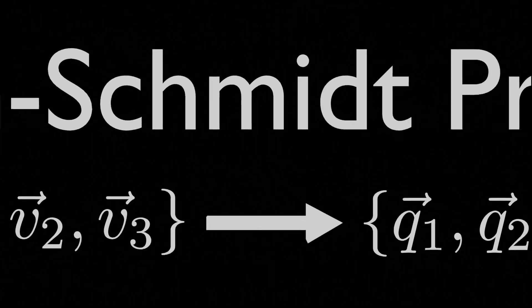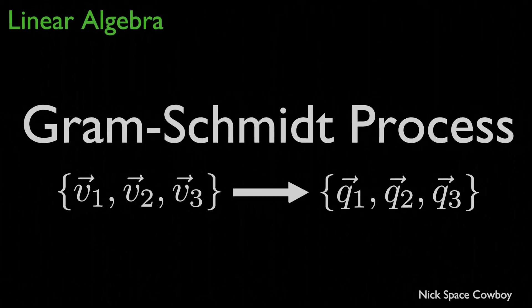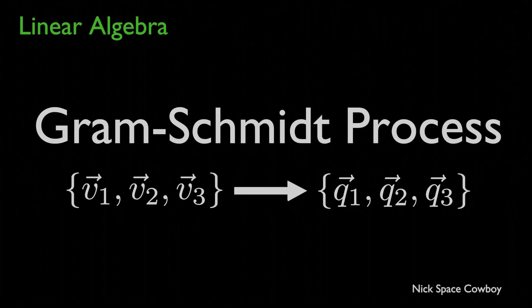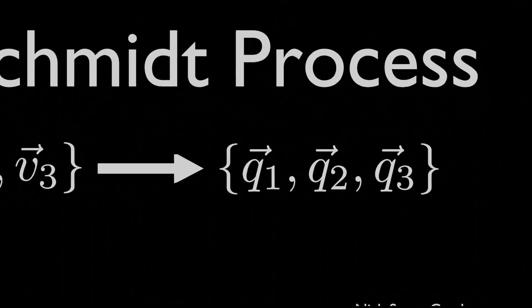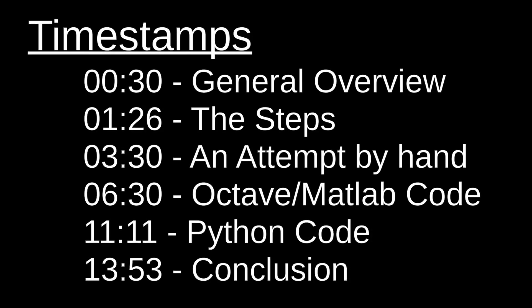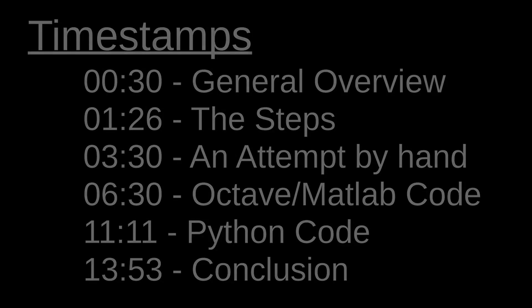Alright folks, in this video we are going to discuss the Gram-Schmidt process. We will attempt an example by hand — keyword there on 'attempt' — and after that attempted example, we will move on to the Gram-Schmidt process coded up in Octave/MATLAB, and then also Python. If you have any questions, comments, or concerns throughout the video, don't hesitate to let me know. You can find all the code shown in this video at the GitHub link in the description down below.